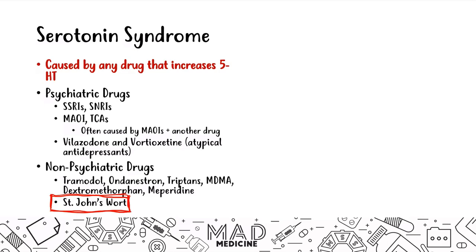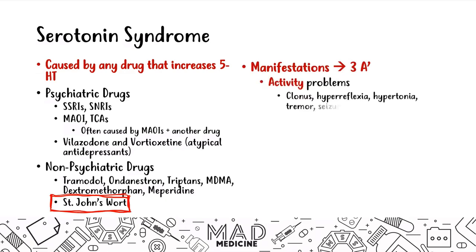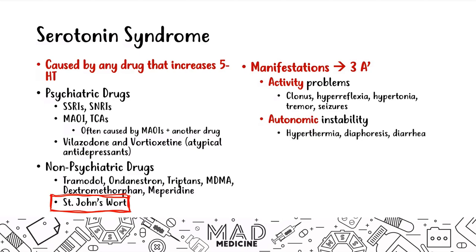The manifestations of serotonin syndrome are the three A's. These patients are going to have Activity problems like clonus, hyperreflexia, hypertonia, tremors, and seizures. They're going to have Autonomic instability like hyperthermia, drenching sweating, and diarrhea, as well as Altered mental status. Try to commit these three A's to memory — it makes it easy to recognize serotonin syndrome in a patient taking psychiatric drugs.